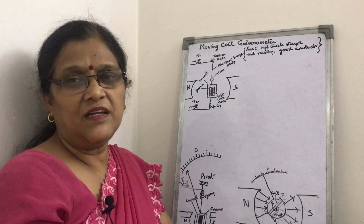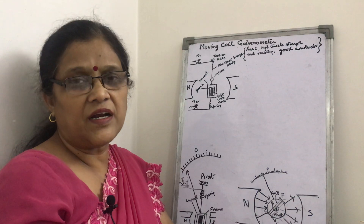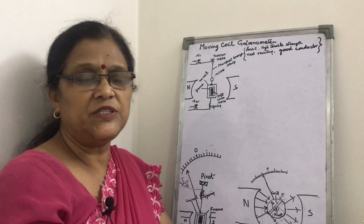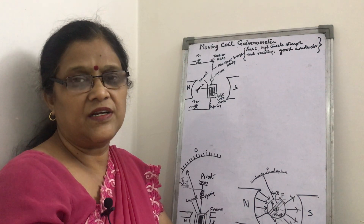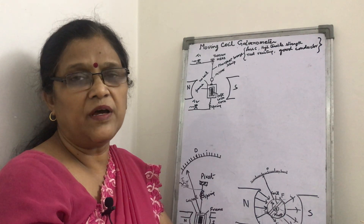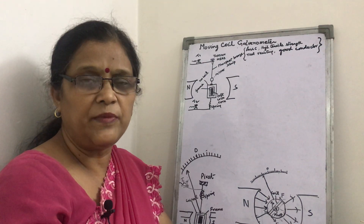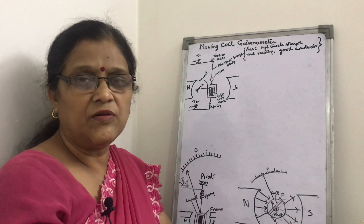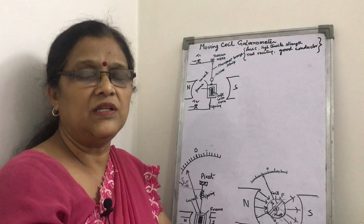Hello, welcome to my channel. In the magnetic effect of current topic, today we will discuss the galvanometer — a device which detects the presence of current in a circuit. There are two types of galvanometer: moving coil galvanometer and suspended coil galvanometer. We will discuss the principle, working, and construction.